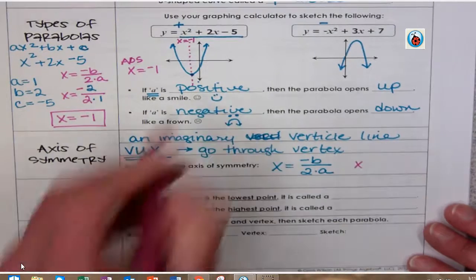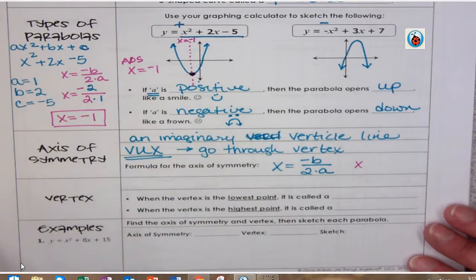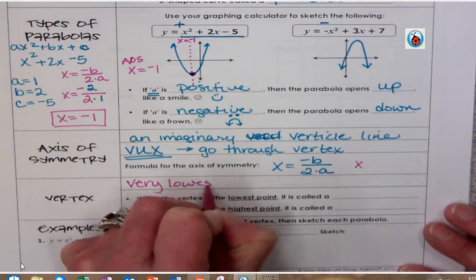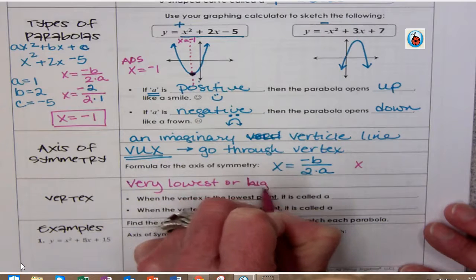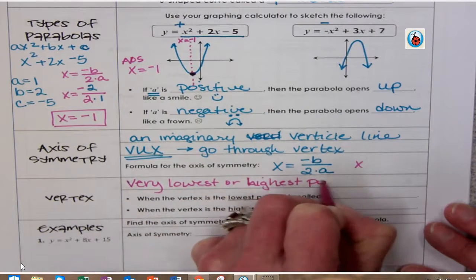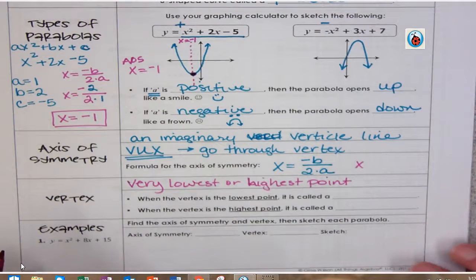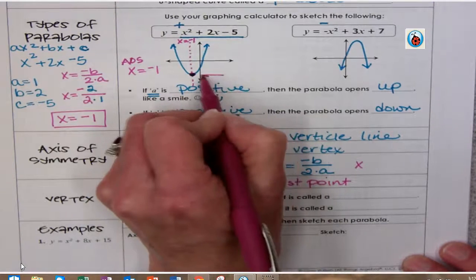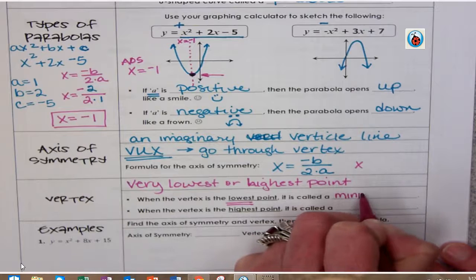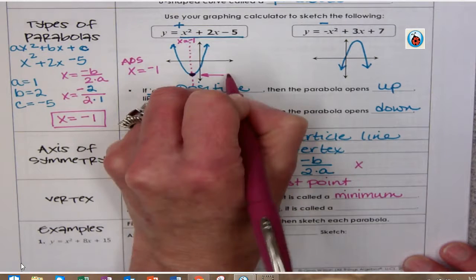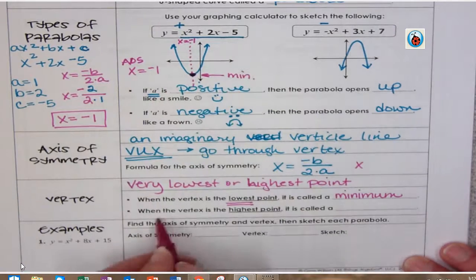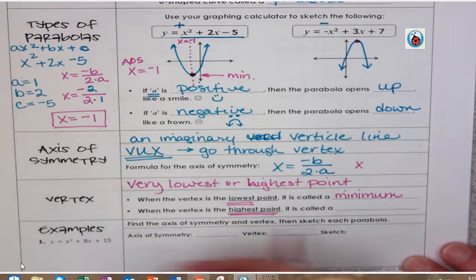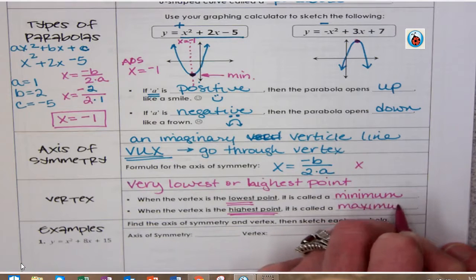Now, we're looking at the vertex. The vertex is this turning point. It is the very lowest or highest point. So it's where the parabola starts to turn around. When the vertex is the lowest point, so in this case, it would be the lowest point, that is called a minimum. When the vertex is at its highest point, which, that would be the case when it's upside down, it's called a maximum.